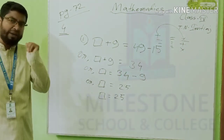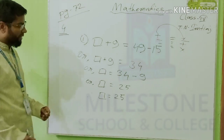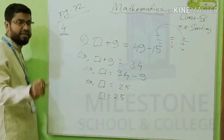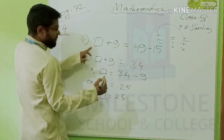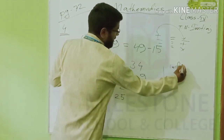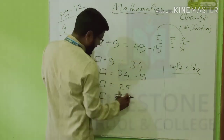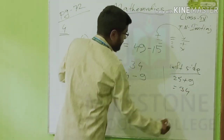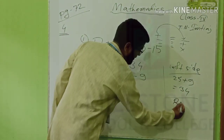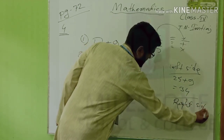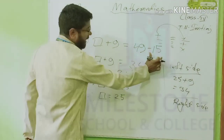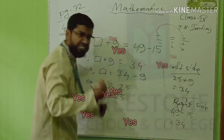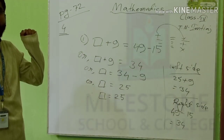Value of blank is 25. You can check it — your math is correct or wrong. You will put this value in. For you, you can check yourself if your math is correct or wrong. See the left side: instead of blank, there will be 25 plus 9, which equals 34. Now the right side: 49 minus 15 equals 34. Yes, our math is fully correct.